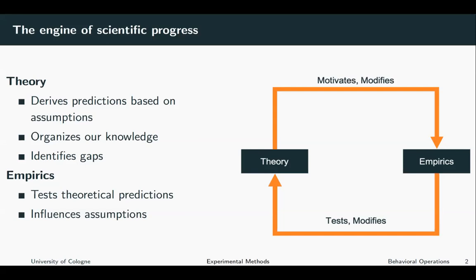The engine of scientific progress is based on theory and empirics. We've seen this already in an earlier lecture — theory and empirics benefit from one another. There's a constant progress and interaction between both disciplines. Theory derives predictions based on assumptions, helps us to organize our knowledge, identifies gaps, and develops questions which can then be answered empirically.